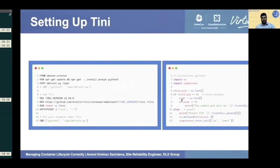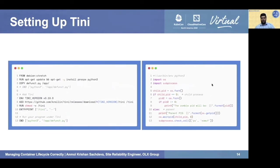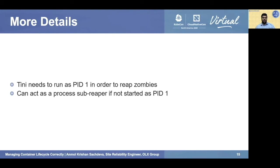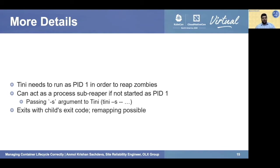Some more details on tini: tini needs to run as PID1 in order to reap zombies. If it cannot run as PID1, it also has provision to run as a sub-reaper — any process that is not PID1 but can perform the reaping function. To enable this, pass the -s argument, so the entrypoint looks like tini -s followed by double hyphens. A special feature of tini is that it exits with the child's exit code, and exit code remapping is also possible. This wraps up the section on zombies, orphans, and tini.